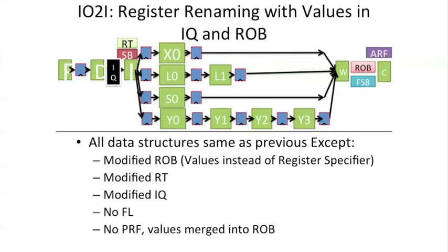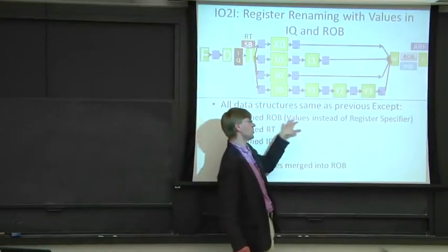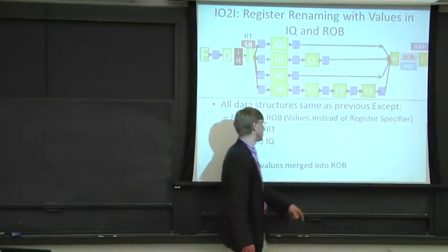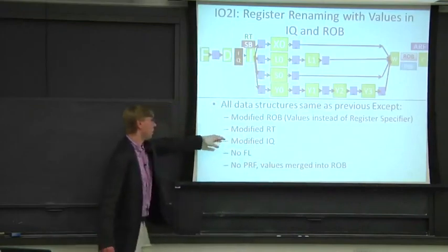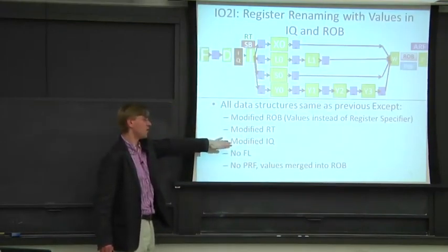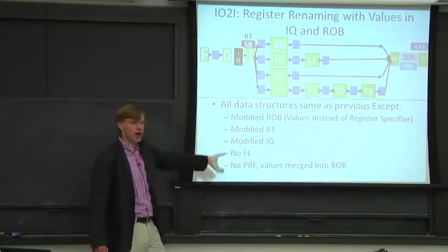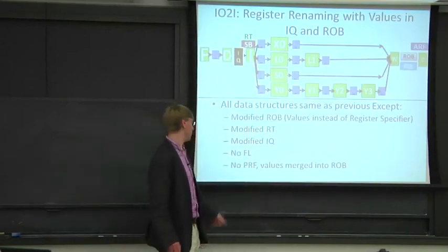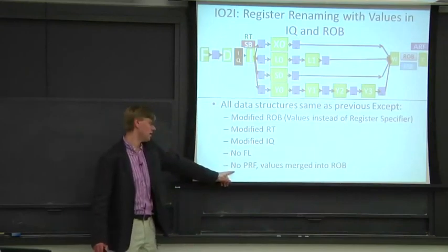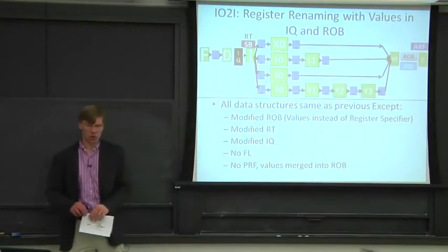We're going to have to modify a bunch of stuff. We're going to actually keep values in our reorder buffer instead of a pointer. Our renaming table is going to be modified. Our instruction queue is now going to be able to keep track of actual data values. And our physical register file has gotten merged into our reorder buffer.